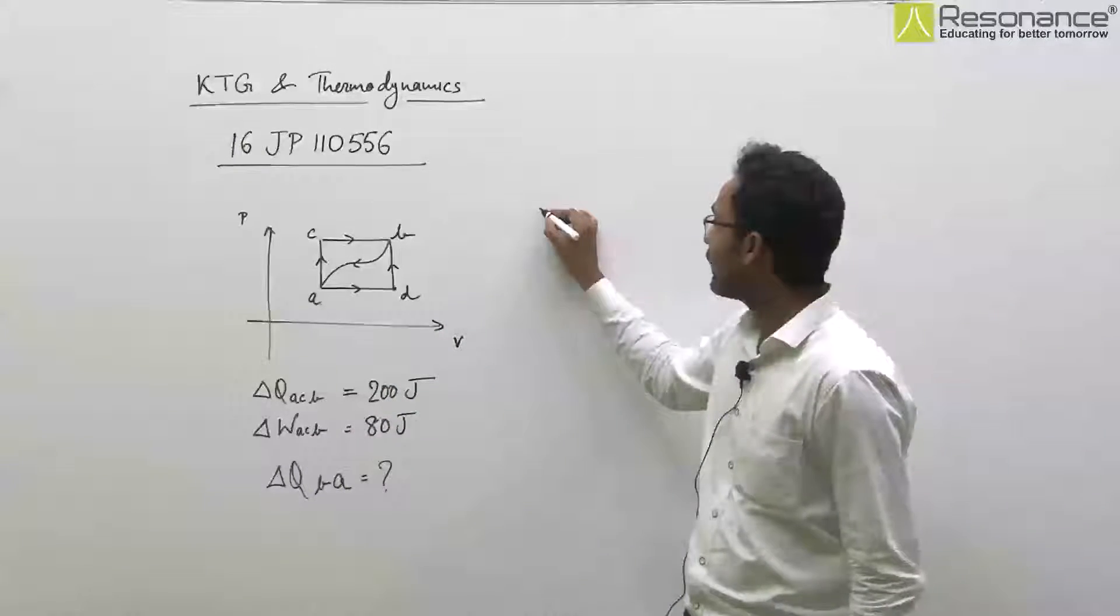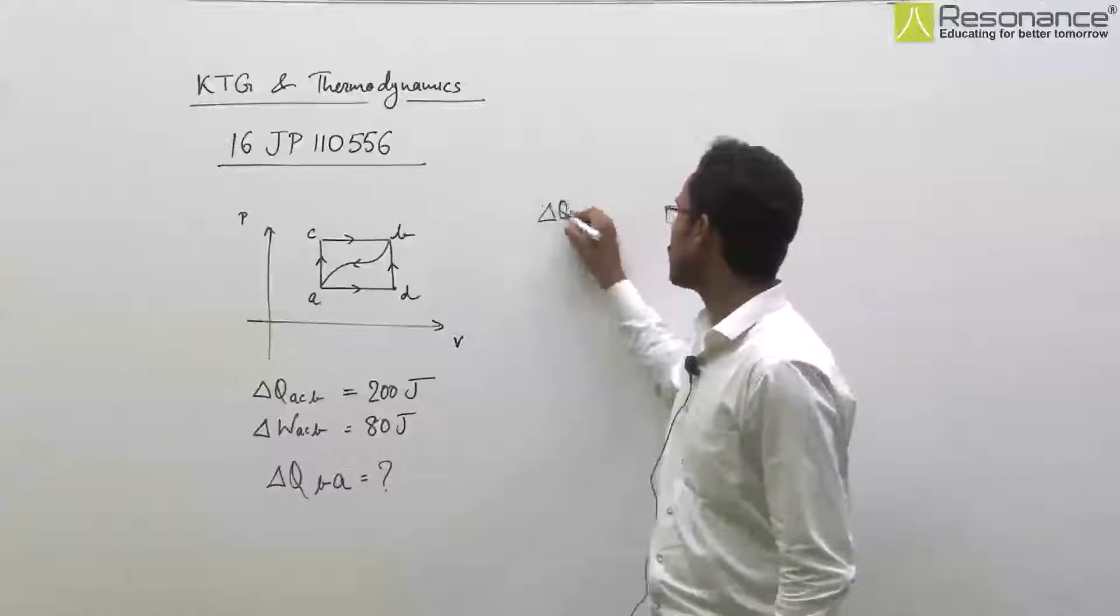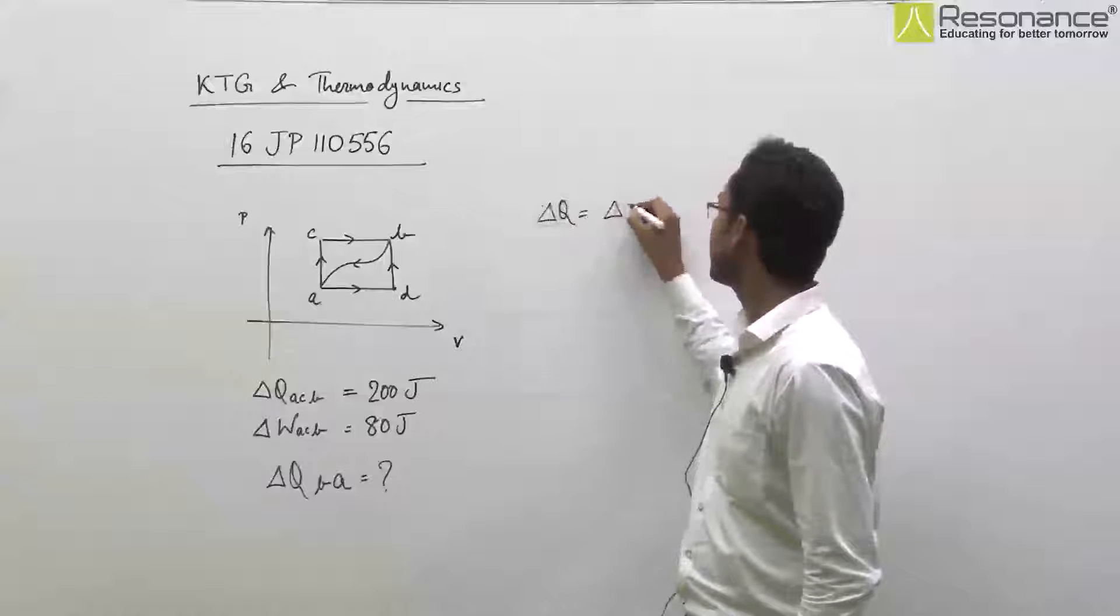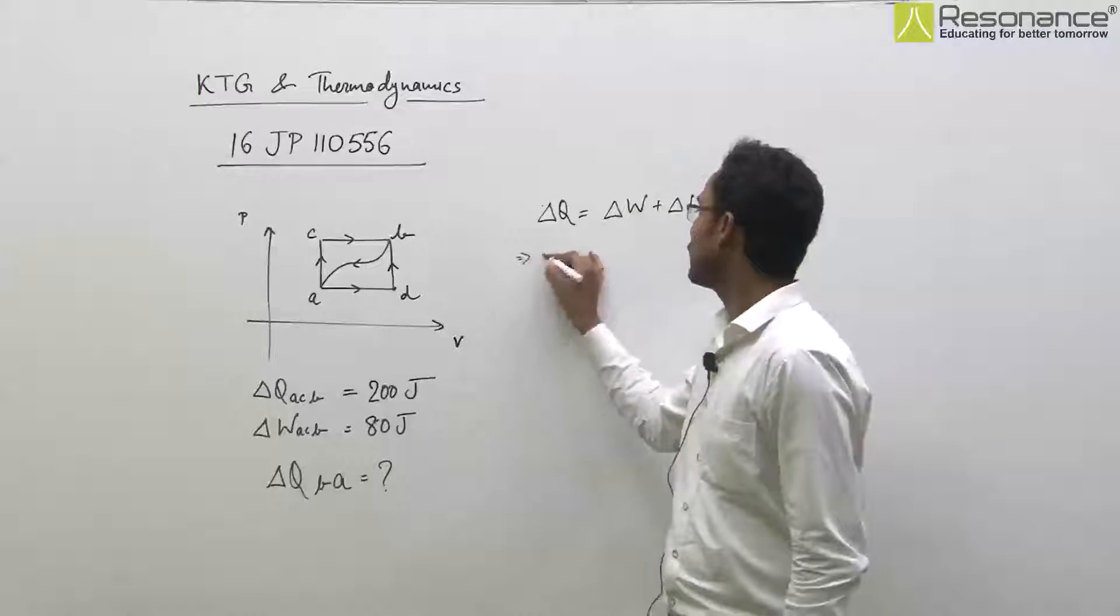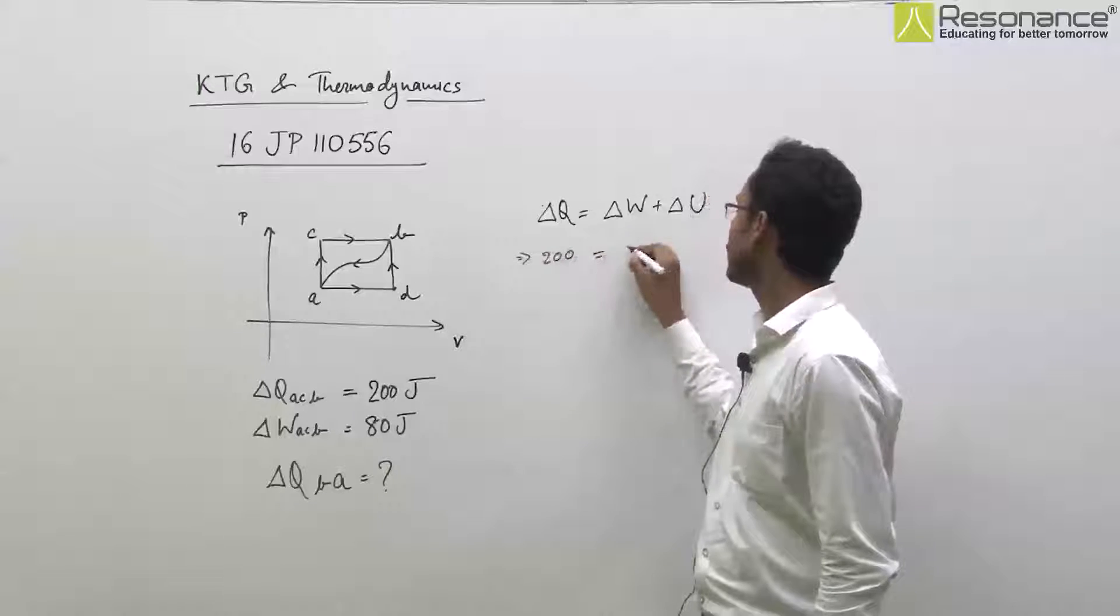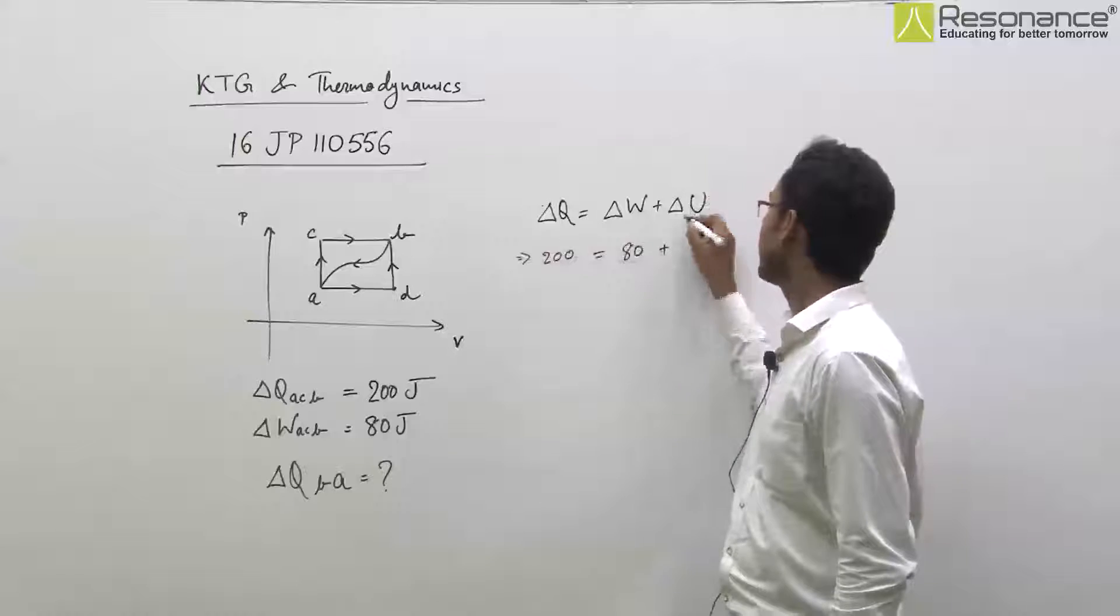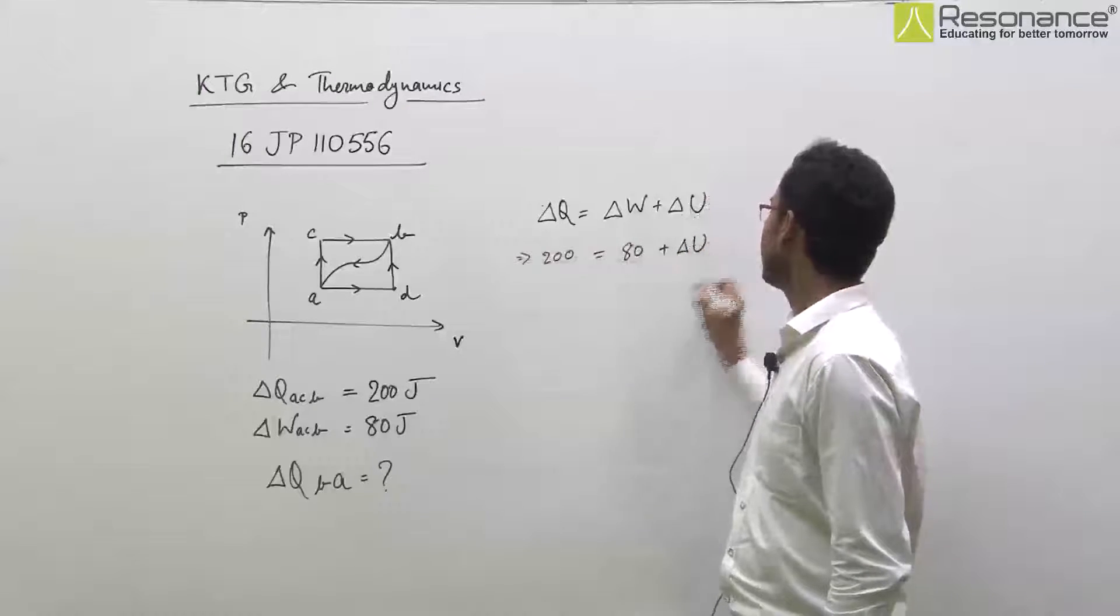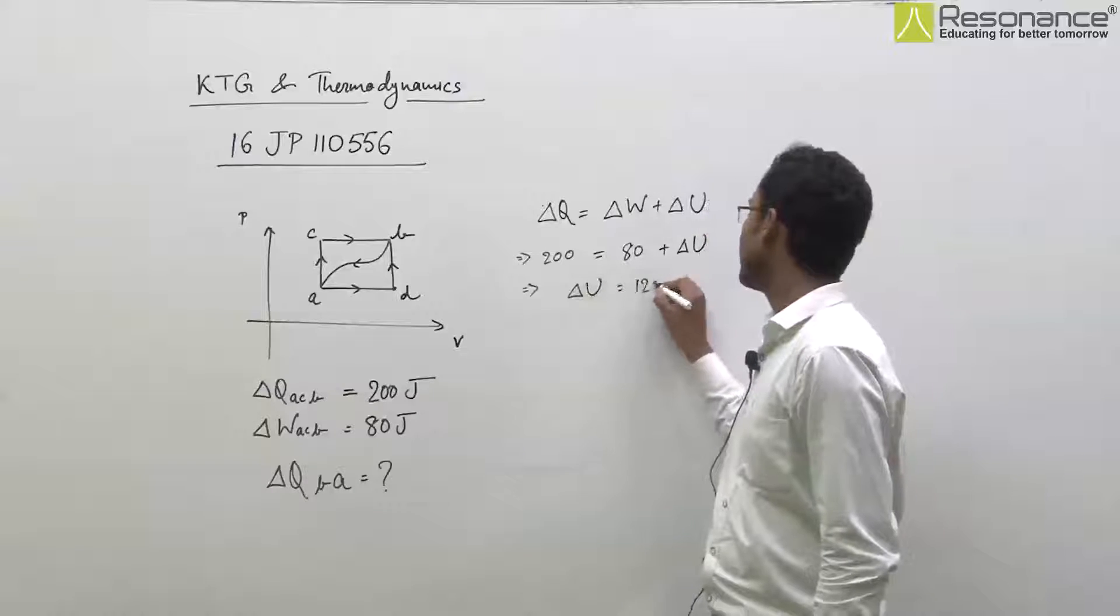Now, we can find change in internal energy by first law of thermodynamics. 200 joule, 80 joule work, and hence internal energy me jo change hoga, woh 120 joule hoga.